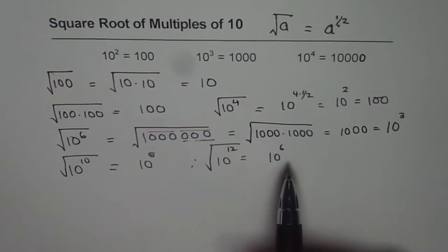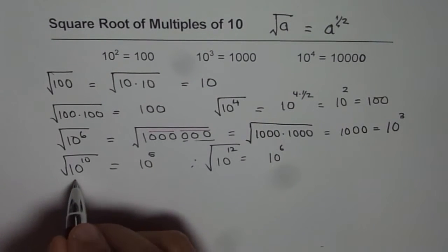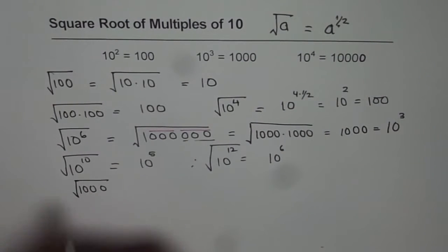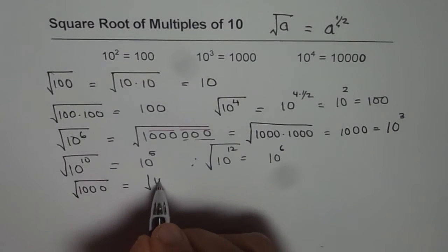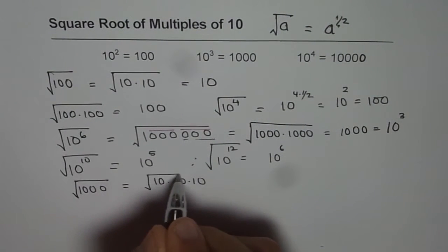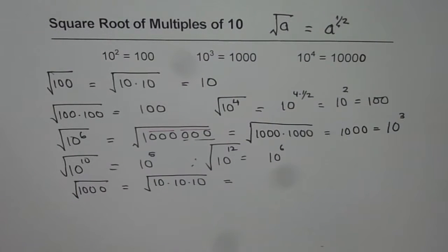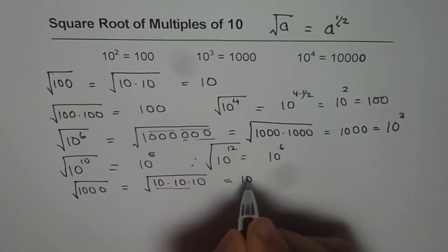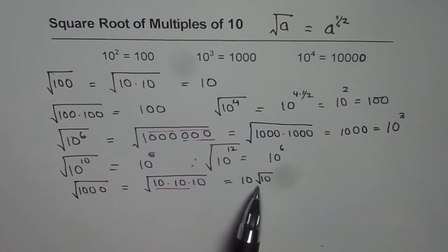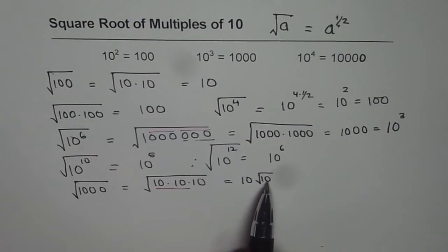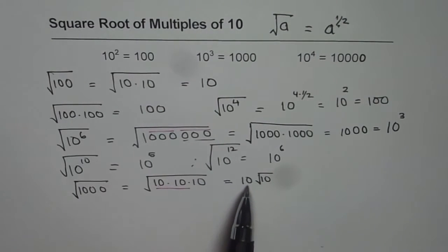It is not necessary that you will always get a whole number as your answer. Let's try with 1000. What is the square root of 1000? Now 1000 is 10 to the power of 3, or 10 times 10 times 10. If I do square root of 1000, I can see two factors of 10 — so one of them can be brought outside the square root, but one still remains inside. So our answer is 10 times the square root of 10. That is 1 and a half power — half of 3 is 1 and a half.